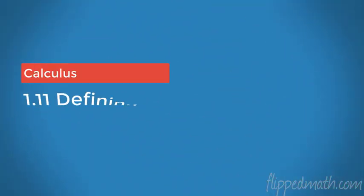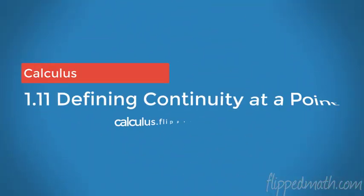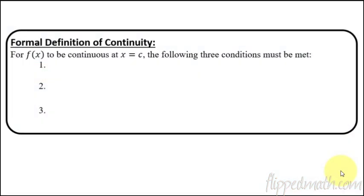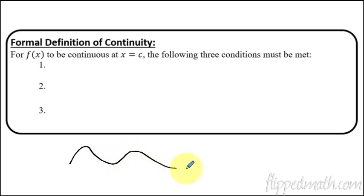Hello calculus kids, this is Mr. Bean. Today's lesson we're going to focus in on how to define continuity at a very specific point. Last time we talked about an informal definition of continuity — when you can graph something without ever lifting up your pencil, it's continuous. But if you have to lift up your pencil and then keep drawing, then it's discontinuous.